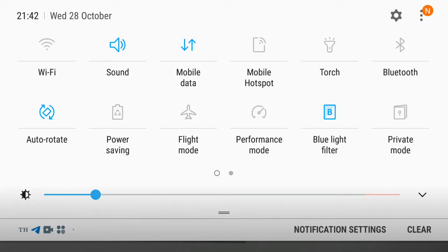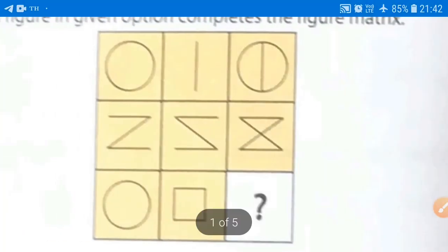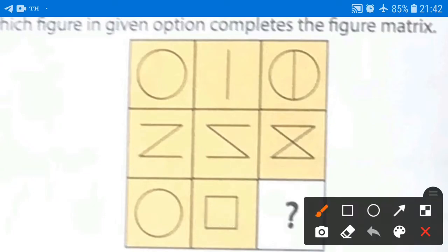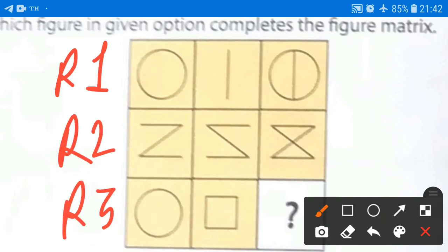here we have this figure in that we have 3 rows. This is row 1, this is row 2, this is row 3. And 3 columns. This is column 1, this is column 2, this is column 3.